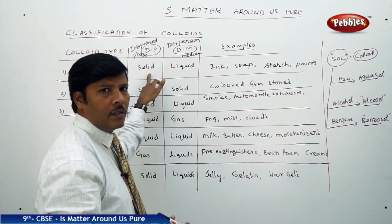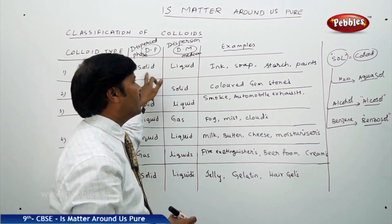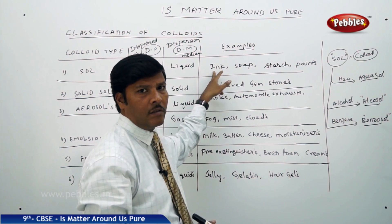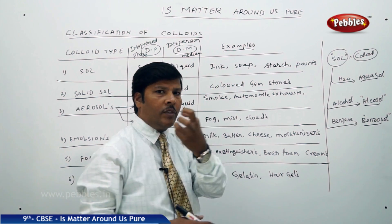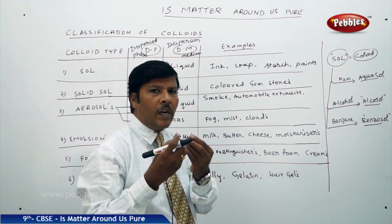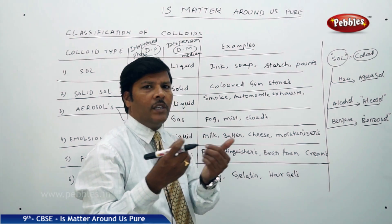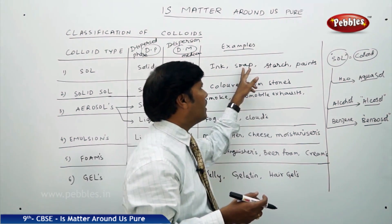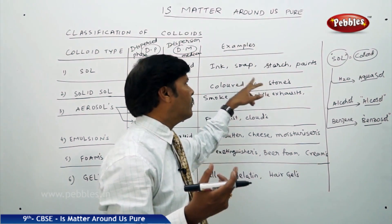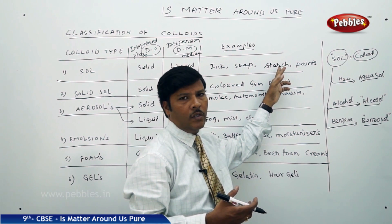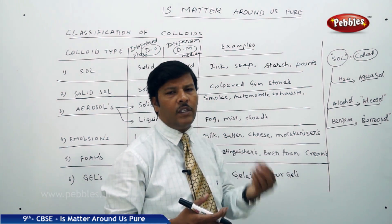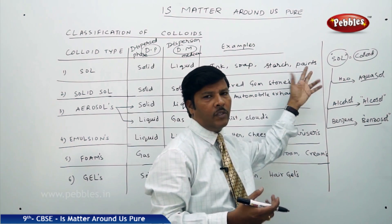The basic colloid is always sol — with dispersion medium as liquid and dispersed phase as solid. Examples of sols include ink, where ink particles dissolved in water form a thick layer and are not easy to fade away. Soap dissolved in water forms plenty of foam. Starch is a polysaccharide, a grayish crystalline powder — once dissolved in water it forms a muddy layer. Paints are also a form of sol.